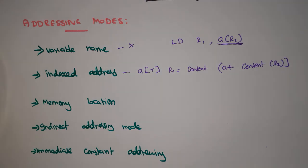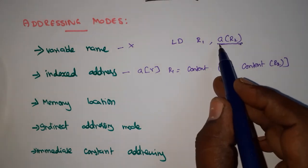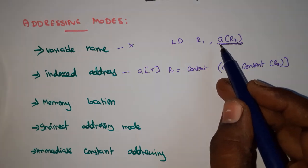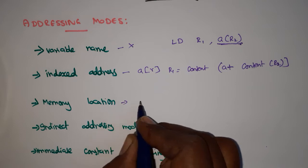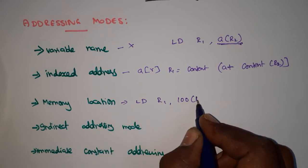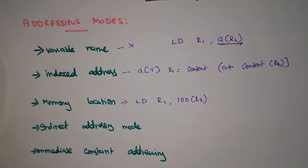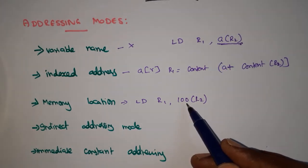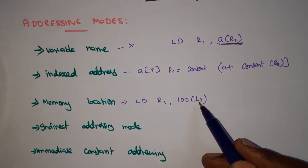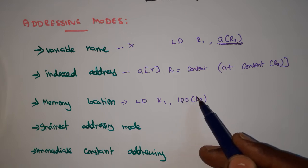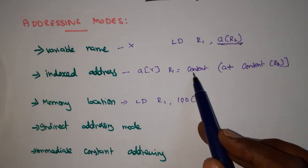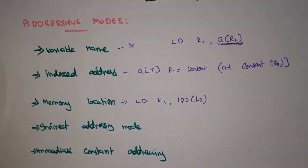Sometimes instead of a symbolic base address like A, a direct numeric address is given. For example, LD R1, 100(R2) means 100 is the base address and R2 is the index position. The value at that computed location is moved to R1. This is called memory location addressing — we give the memory location directly instead of using an array name.